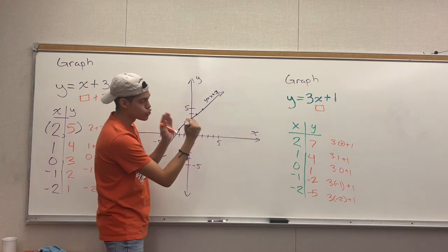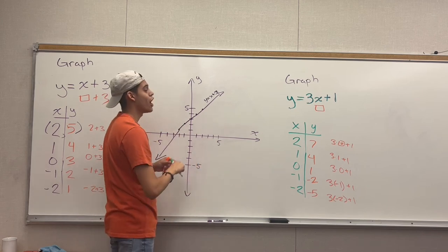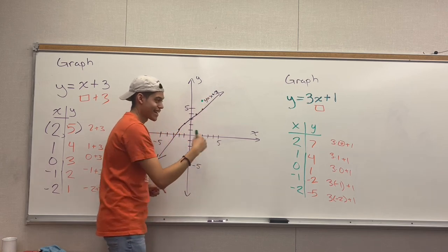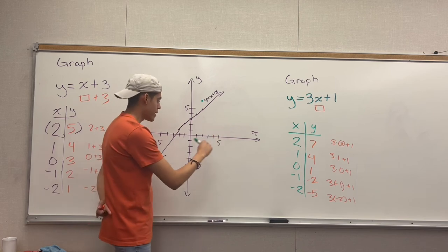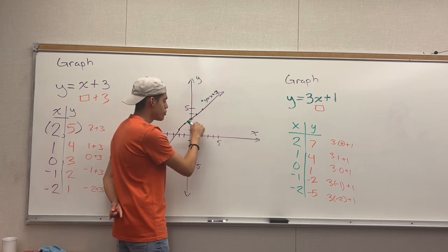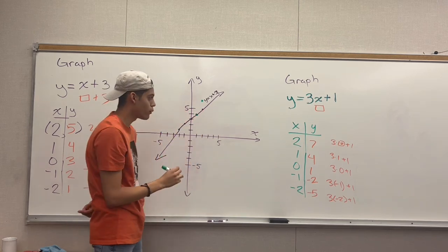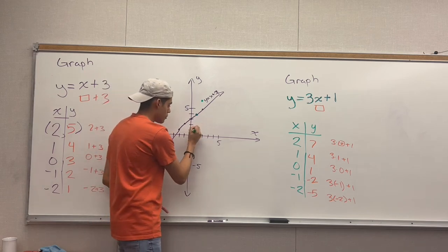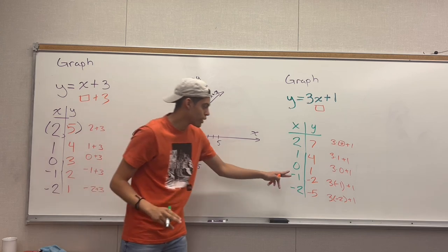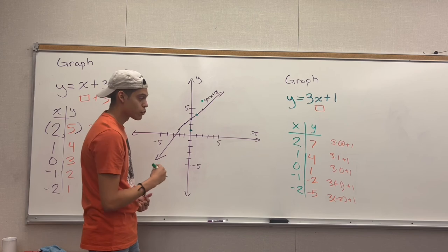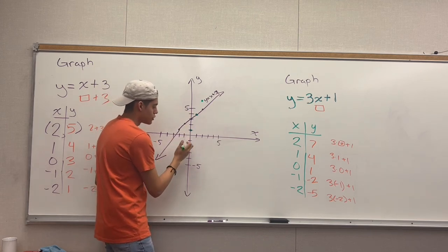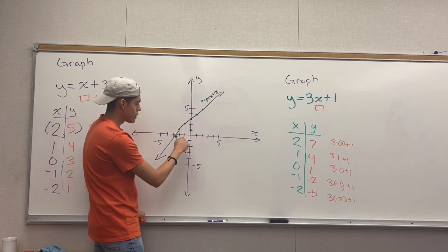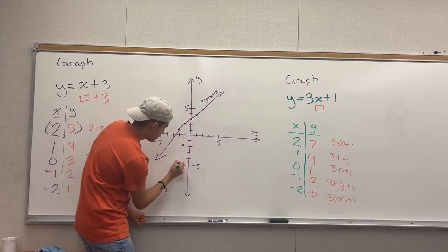Now we plot those points on the coordinate plane. For (2, 7): move right 2 spaces, then up 7 — point is here. For (1, 4): right 1, up 4 — that's the same point as from the previous equation. For (0, 1): don't move left or right, just go up 1. For (negative 1, negative 2): go left 1 space, then down 2 spaces. For (negative 2, negative 5): move left 2 spaces, then down 5 spaces — point is down here.